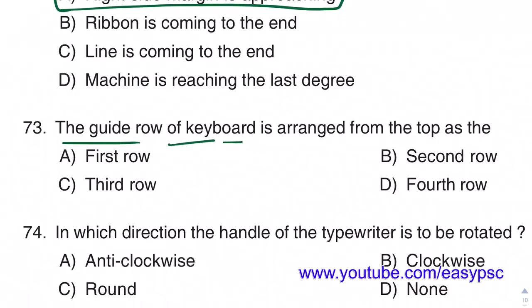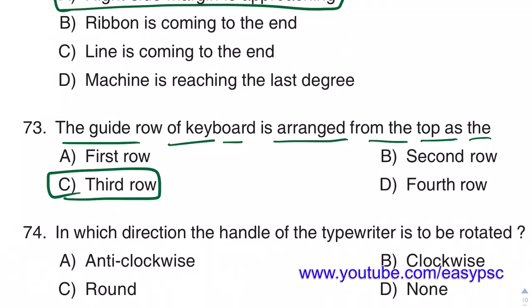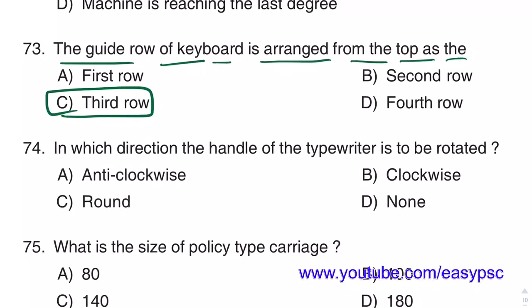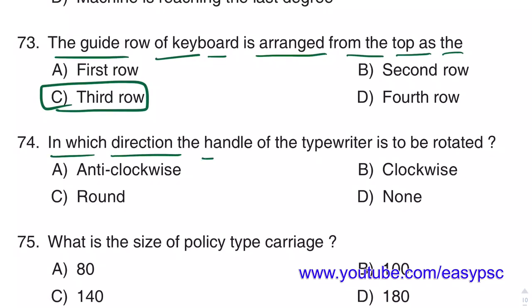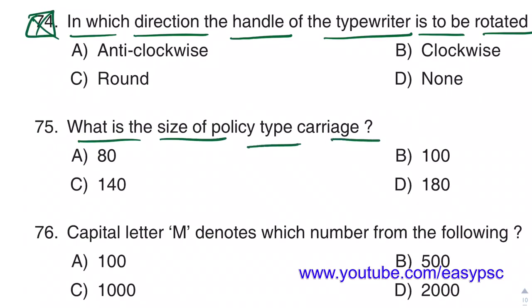The guide row of the keyboard is arranged from the top as the third row. The size of the policy type carriage is 180.